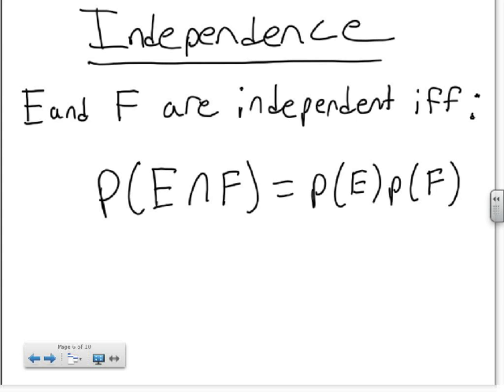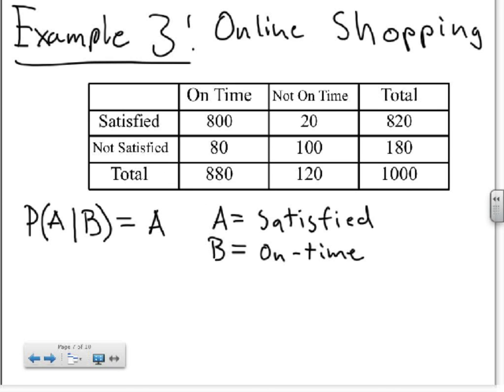We're going to look at an example of independence here. It's an online shopping example based on some made-up data set of whether customers were satisfied or not satisfied with their online shopping experience and whether their products that they ordered arrived on time or not on time. Now, the topic of independence says that if two events, A and B, as you can see here, are independent, then the probability of A given B will equal the probability of A.